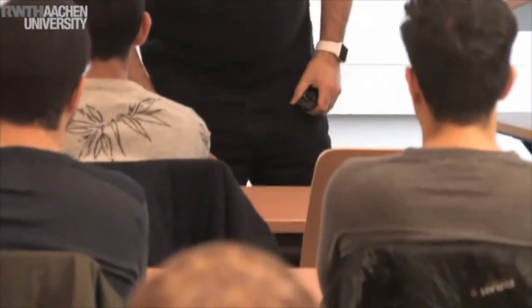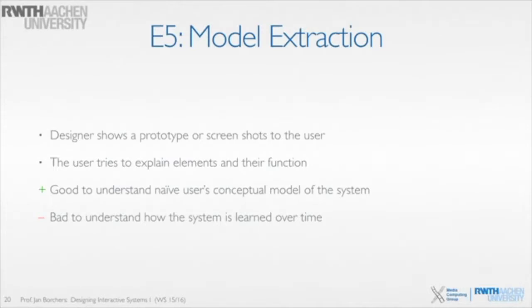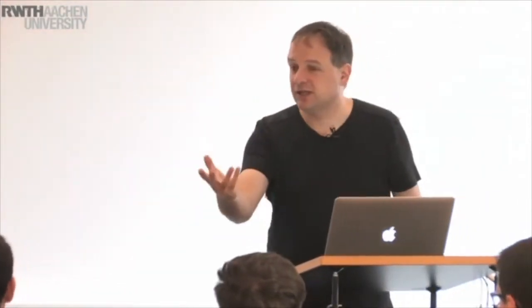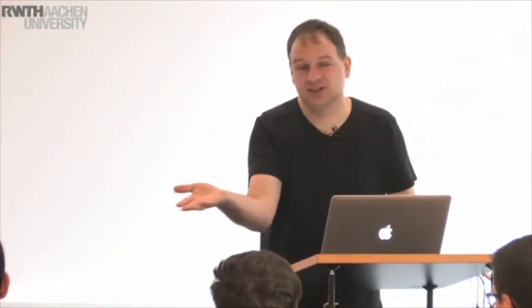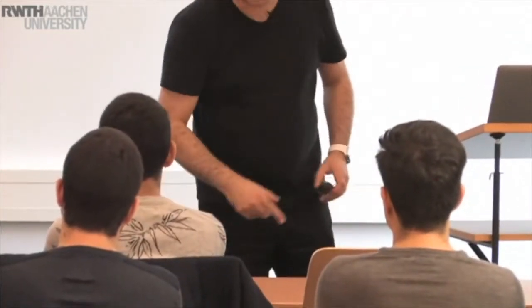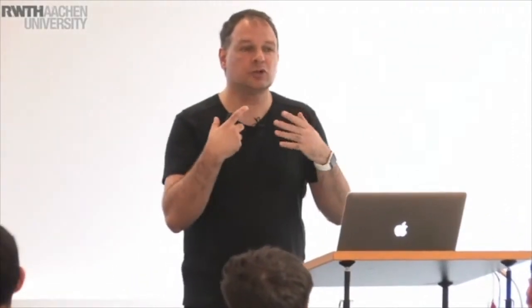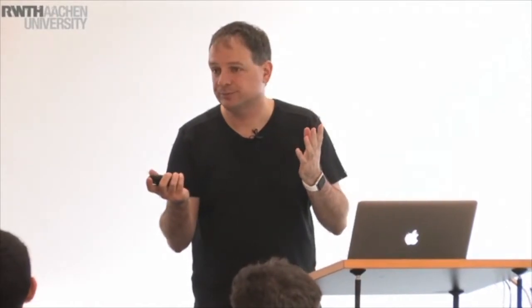Give it to him and look at him — give it to him and see what happens. That's pretty much model extraction. What that means is I take the interface, show it to you as a user — the prototype, screenshots, whatever — and then I ask you to explain the interface to me. So I ask: what do you think this is? What do you think this button does? We step through and extract the model from the user, trying to understand what the naive user's conceptual model is when he first sees the system.